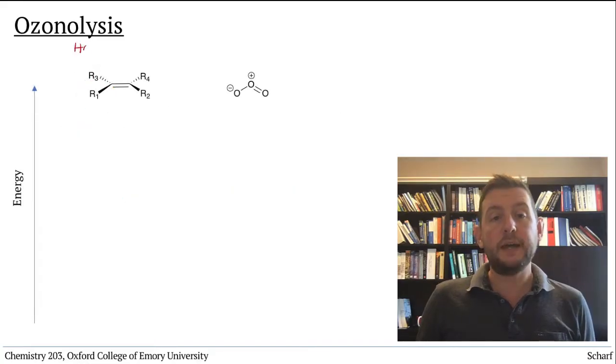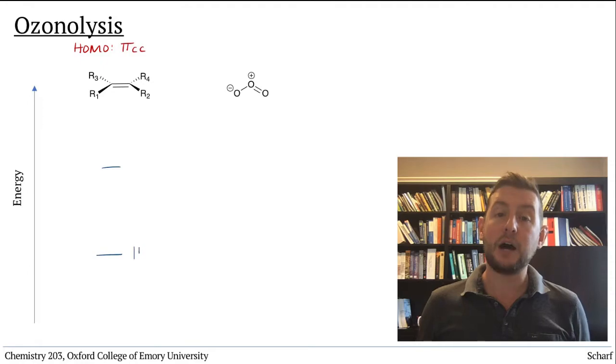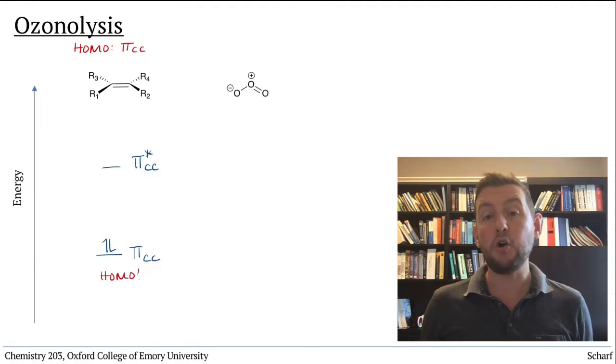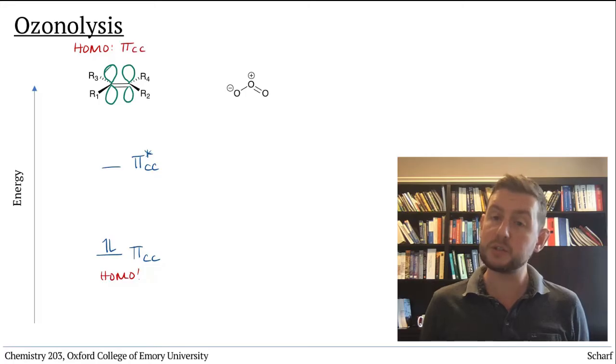In all the reactions of alkenes, their dominant MO is the alkene's HOMO, pi CC, which looks like this.